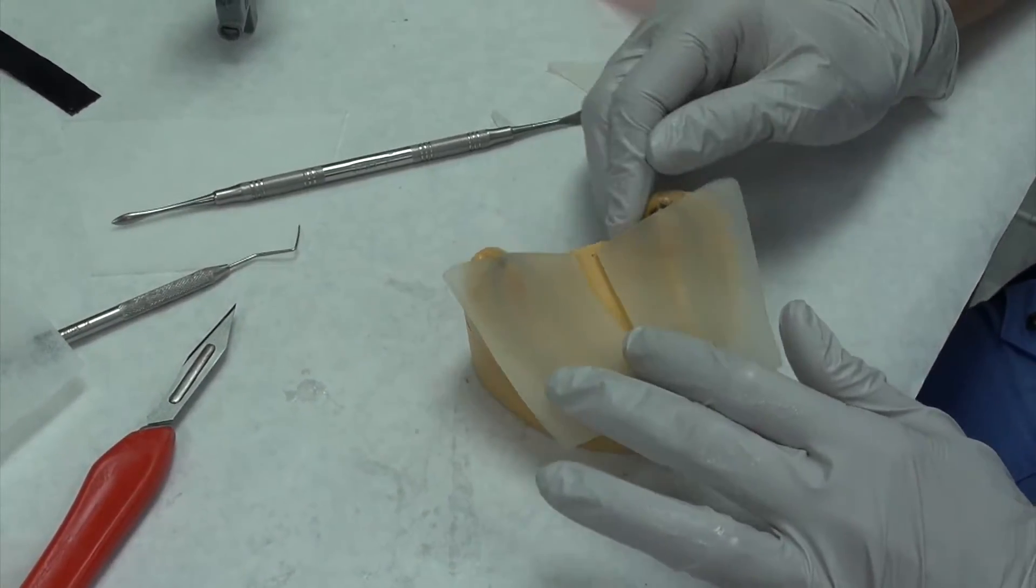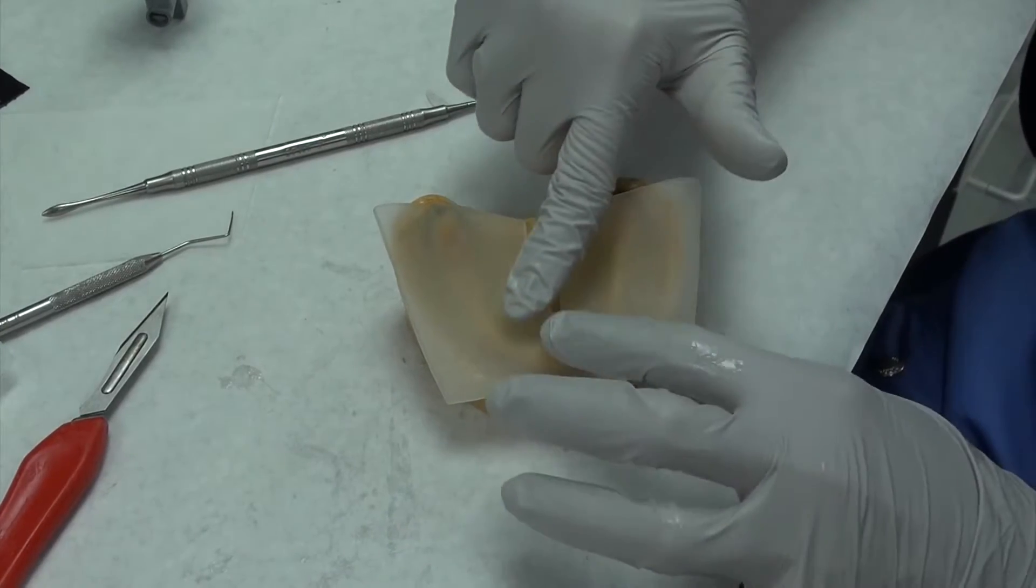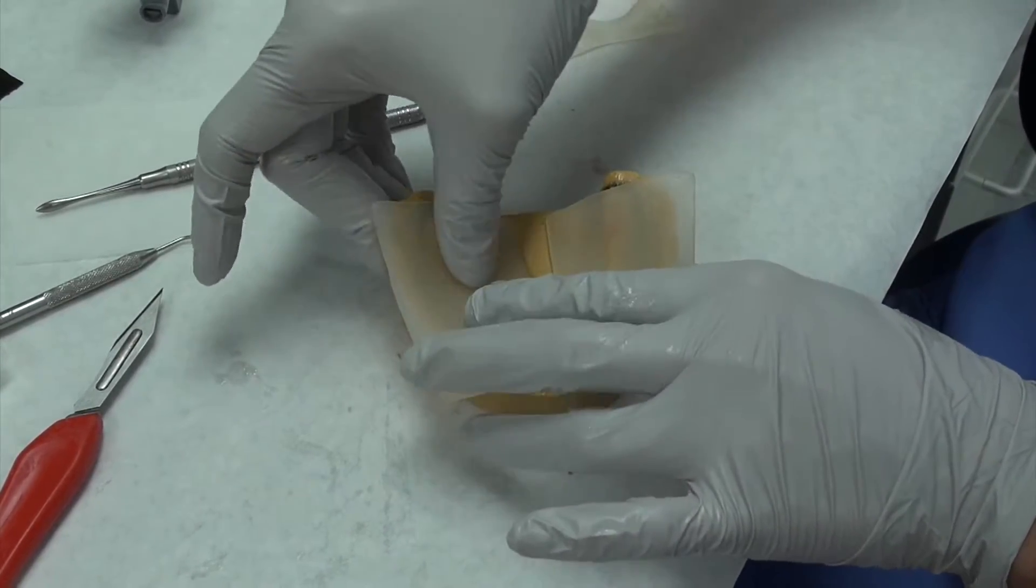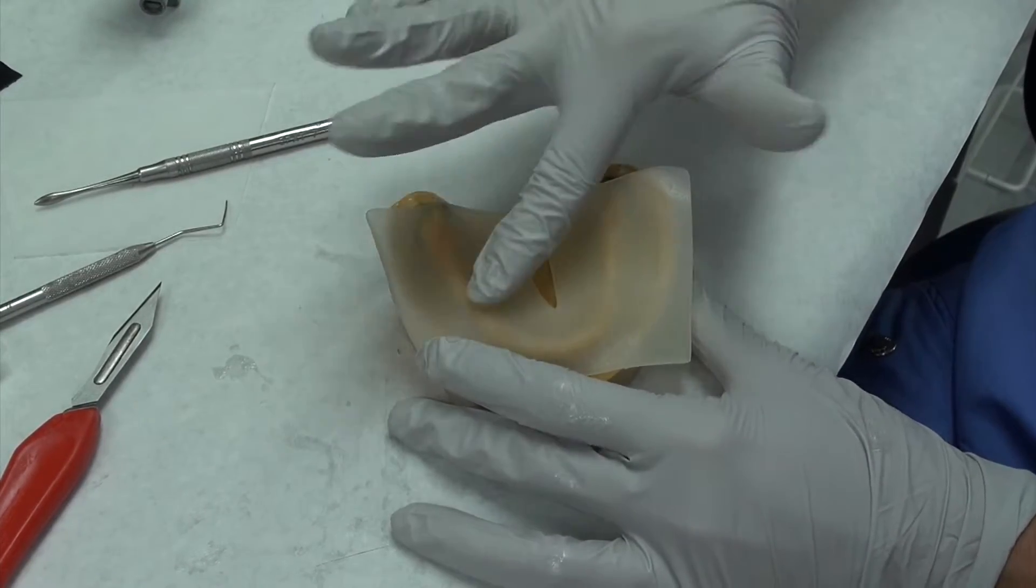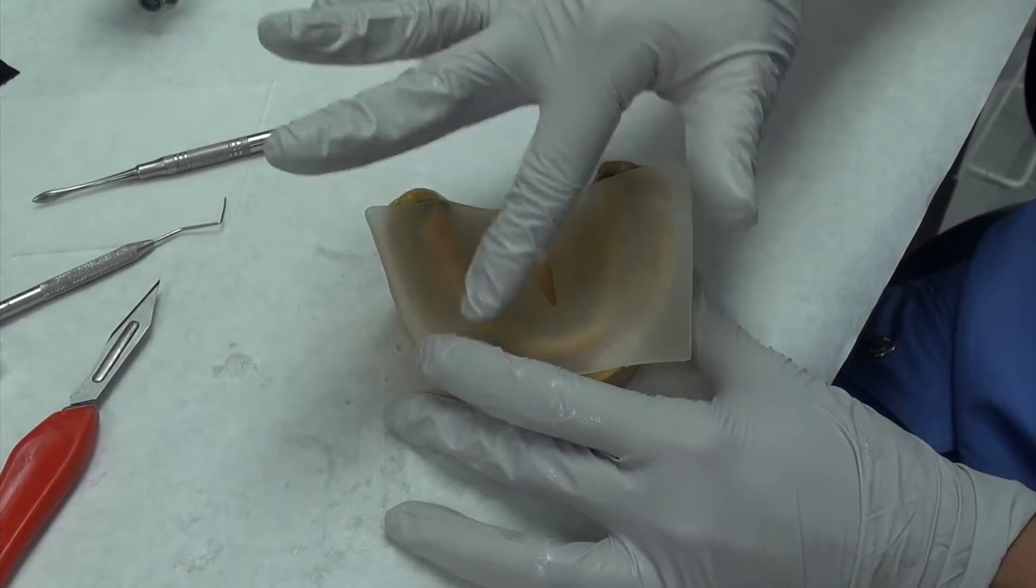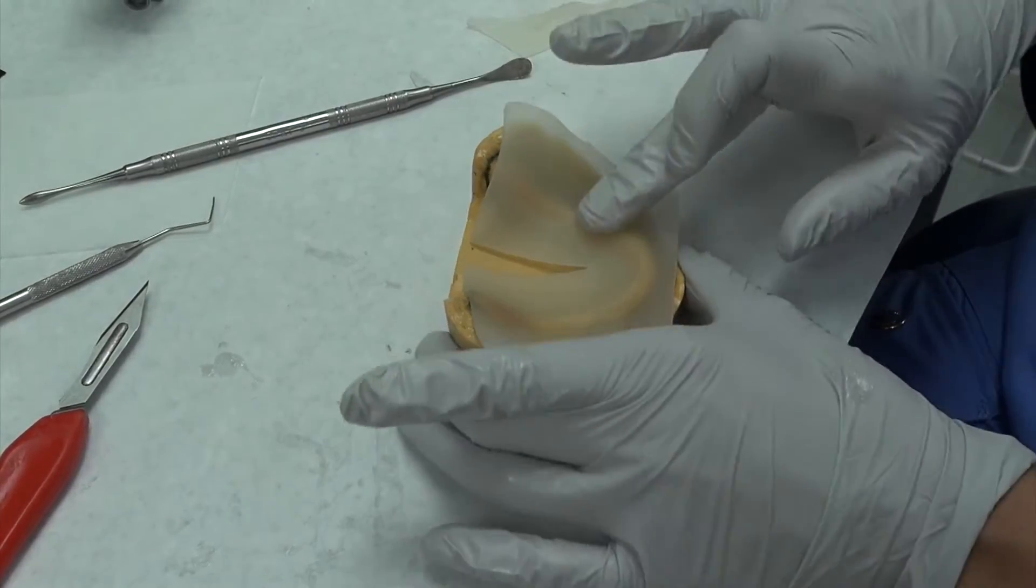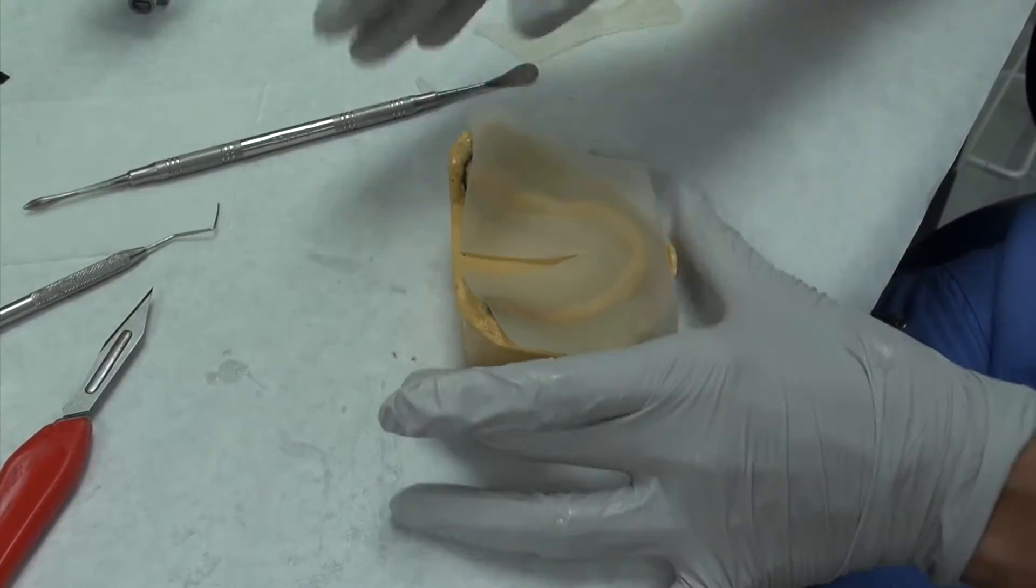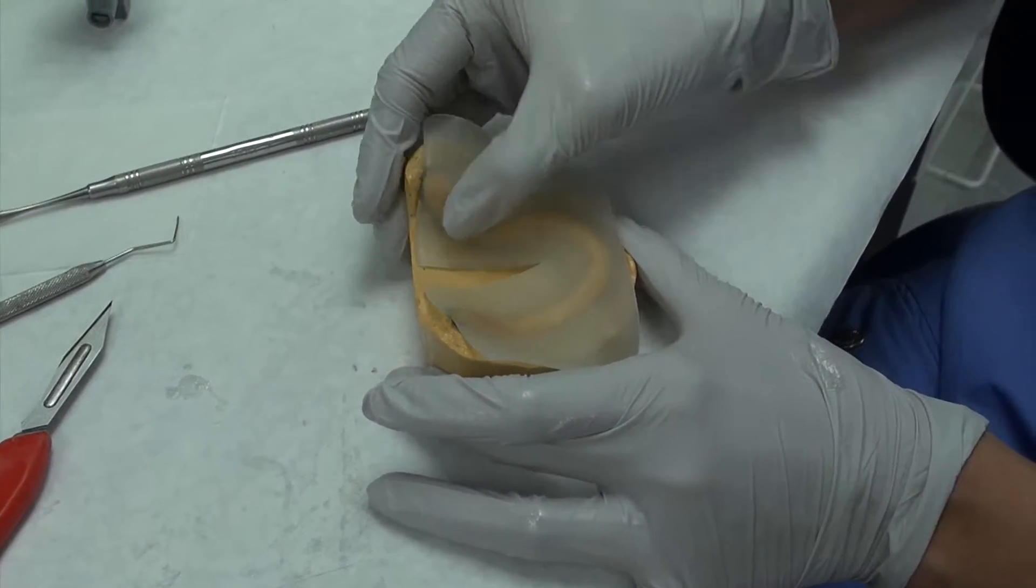Now here we'll go from the center again. But for the mandibular, the center is the residual ridge. So you will line your finger across, soft pressure, you don't want to make it too thin, along the crest of the residual ridge.